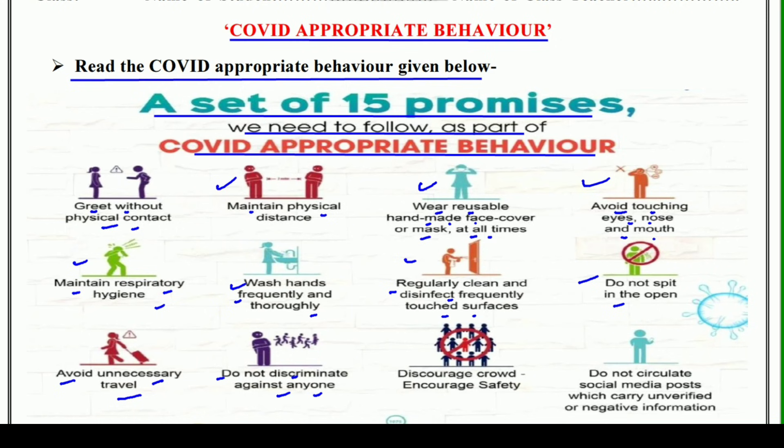Next is: discourage crowd, encourage safety. Discourage crowd, encourage safety ka matlab hota hai — discourage crowd yani bheed ko ikhatta mat hone do, bheed mein na jaayen, na bheed ko ikhatta hone do. Safety ko baadhein, encourage karein — isse suraksha badhegi. Agar aap na bheed mein jaate hain, na bheed ko ikhatta hone dete hain, toh yeh aapki safety ko badhata hai.